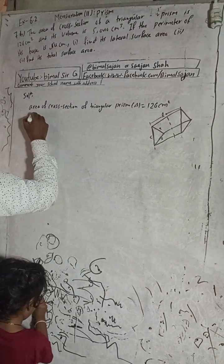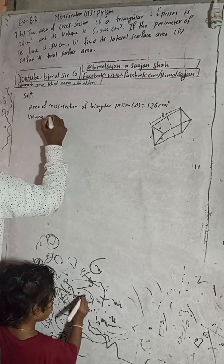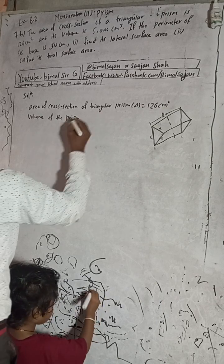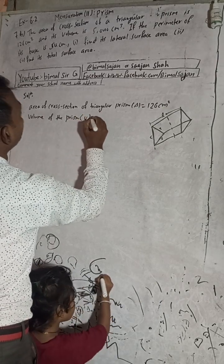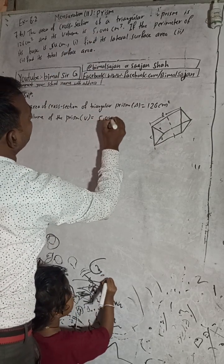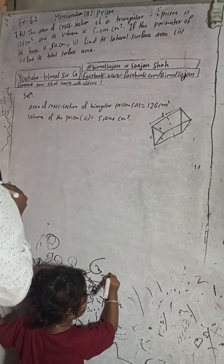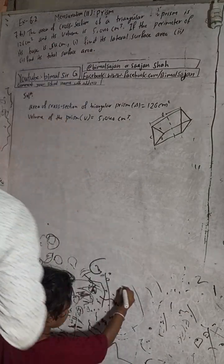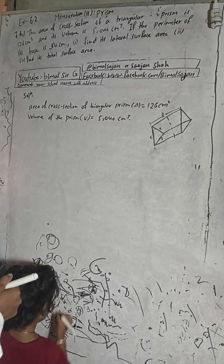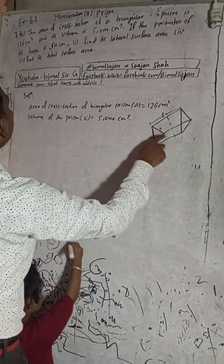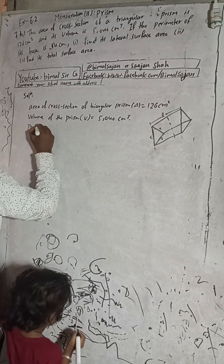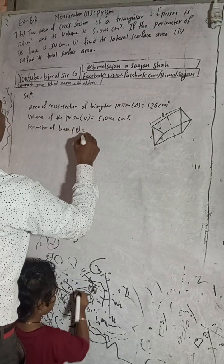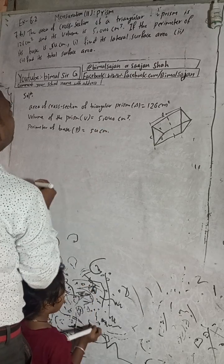Now, volume of the prism — the volume is given here as 5040 cm³. If the perimeter of the base is given here — perimeter of the base means this base — perimeter of the base is given as 54 cm. Number 5 asks for lateral surface area.